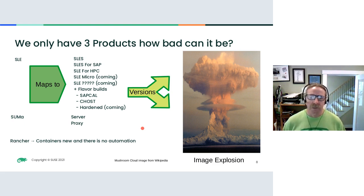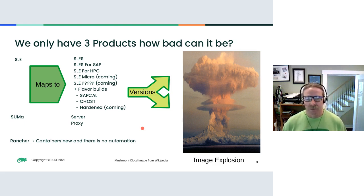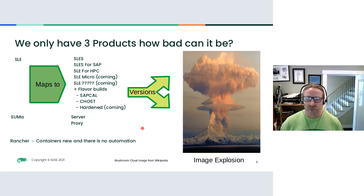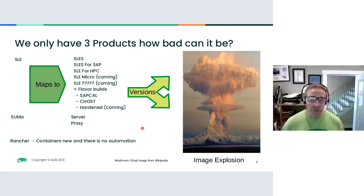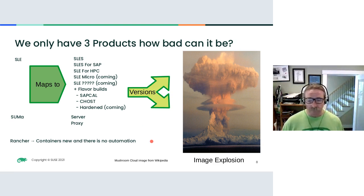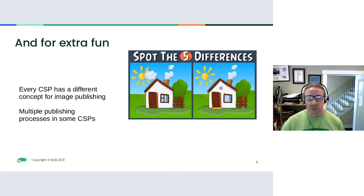But if we just look at the SLE family alone, that maps to SLES, SLES for SAP, SLE for HPC, SLE Micro is in the works, and SLE something else is coming. And of these, we have flavor builds: SAP Cal, C-host, hardened images are coming. For SUSE Manager we have server and proxy. Then you add the version to that, and very quickly you can see how this explodes into a lot of images. We have a proliferation of images that need to be managed with respect to lifecycle and image description. The images all need to be monitored in the build service to ensure they build and are ready for release.